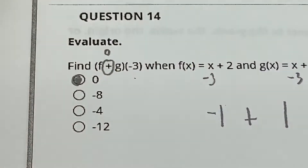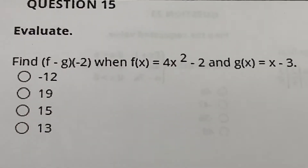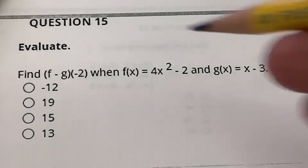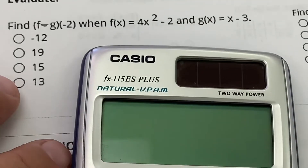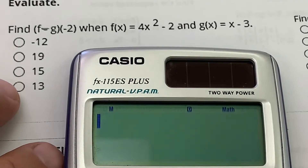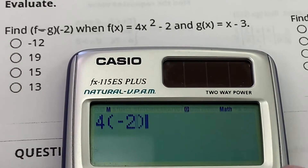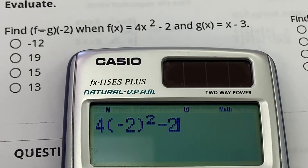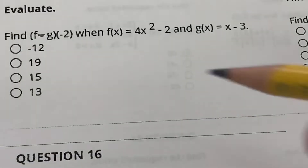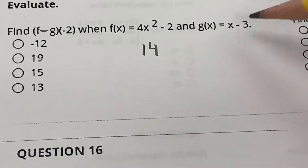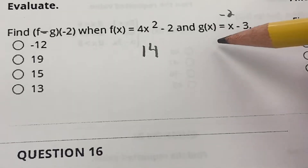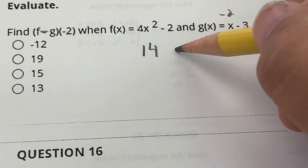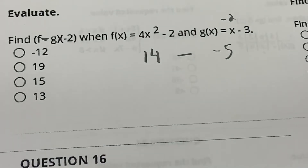Number 15: plug −2 into both items and subtract. For f: 4(−2)² − 2 = 14. For g: (−2) − 3 = −5. They want me to subtract: 14 − (−5). Be careful — that's 19.